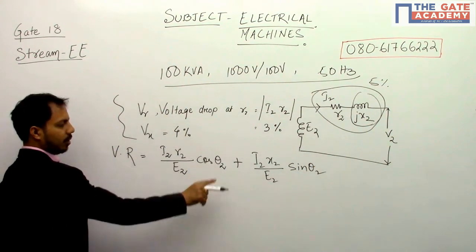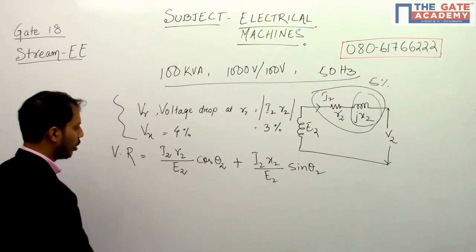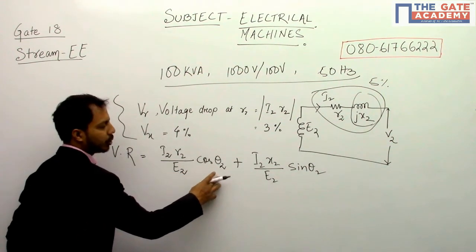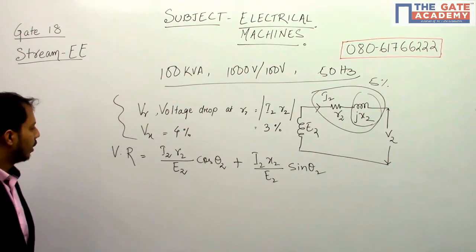Now if cos θ2 is given as 0.8, then sin θ2 will be 0.6, simple.